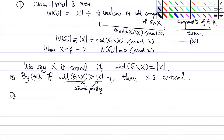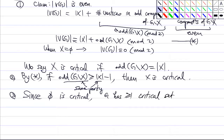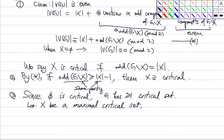Now let's choose a maximal critical set. Since the empty set is critical, there is at least one critical set — G has at least one critical set. So we can choose a maximal one. Let X be a maximal critical set, which means that whenever you have a bigger set containing X, that set is not critical.